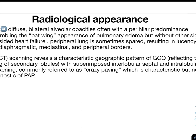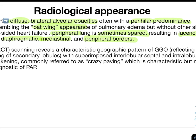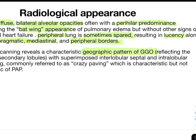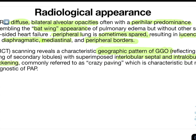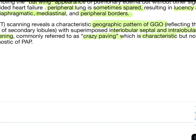On chest X-ray, there are diffuse bilateral alveolar opacities, often with perihilar predominance, resembling a batwing appearance similar to pulmonary edema but without other signs of left-sided heart failure. The peripheral lung is sometimes spared, resulting in lucency along the diaphragmatic, mediastinal, or peripheral borders. On HRCT, the characteristic finding is a geographic pattern of ground glass opacity with superimposed interlobular septal thickening — referred to as crazy paving appearance, which is characteristic of but not diagnostic of PAP, as it can occur in other conditions like acute silicosis.